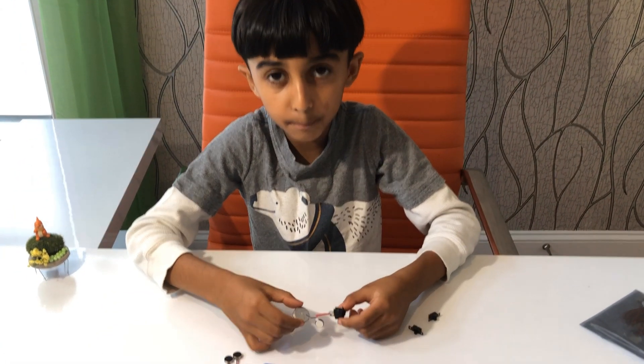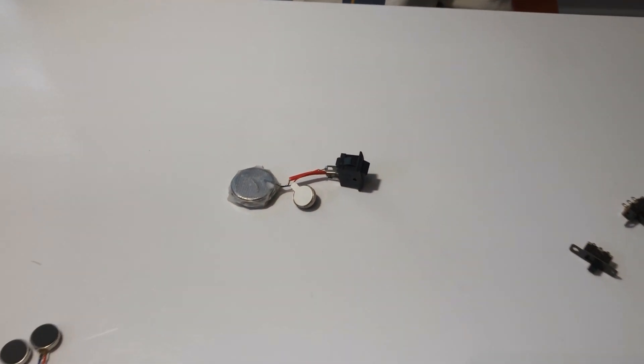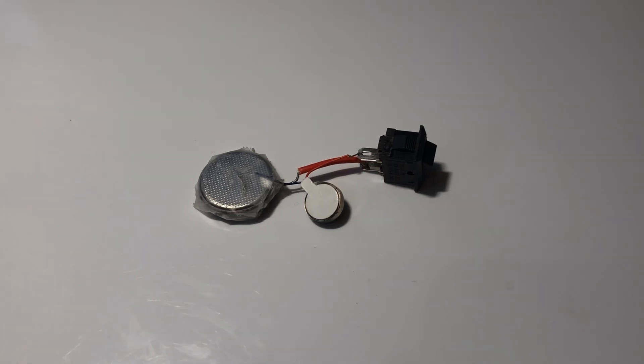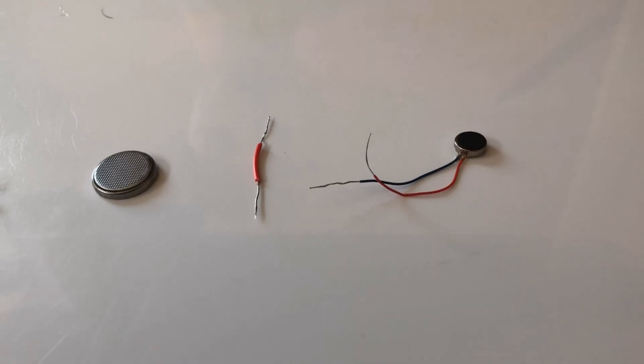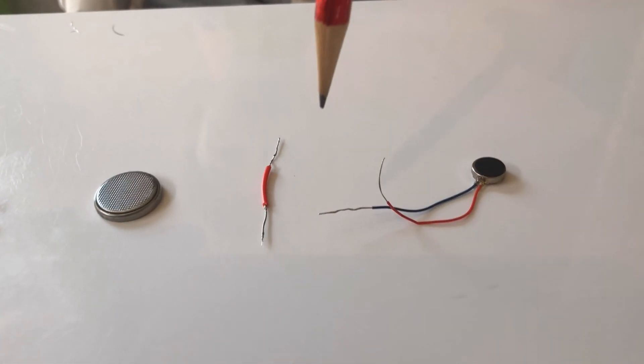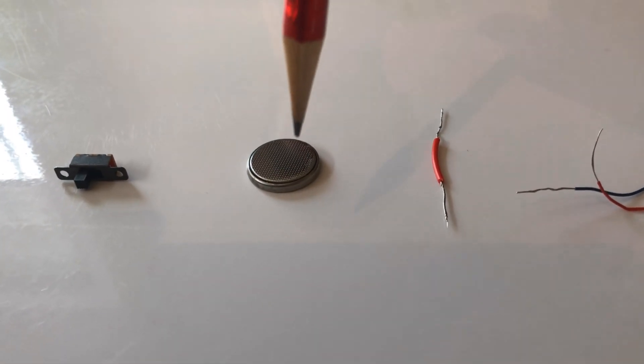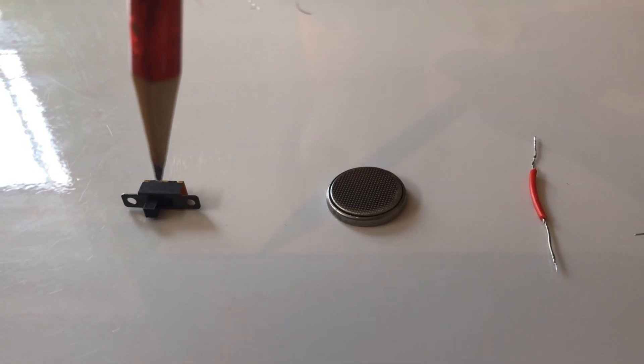First step, you need to disassemble. To complete the circuit, you will need a mini vibrator, a small wire with open ends, a mini battery, and a toggle switch.